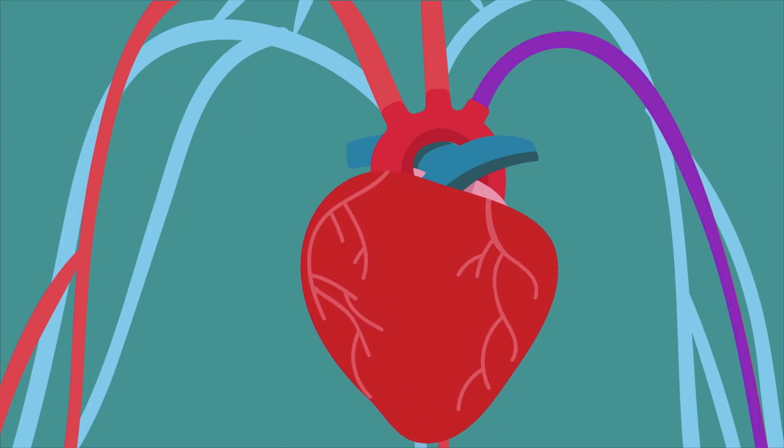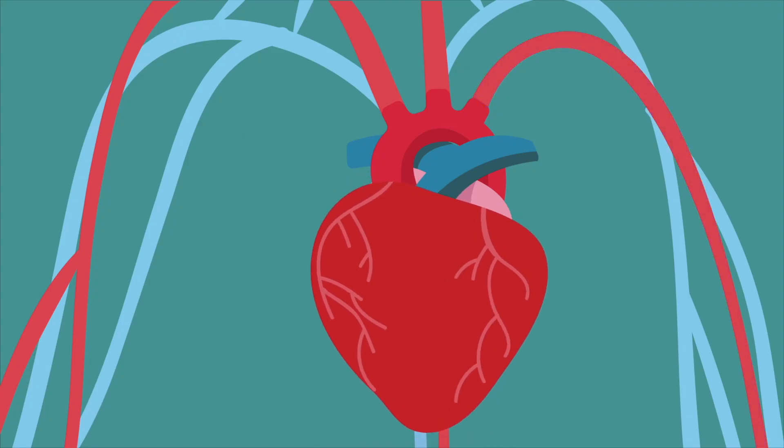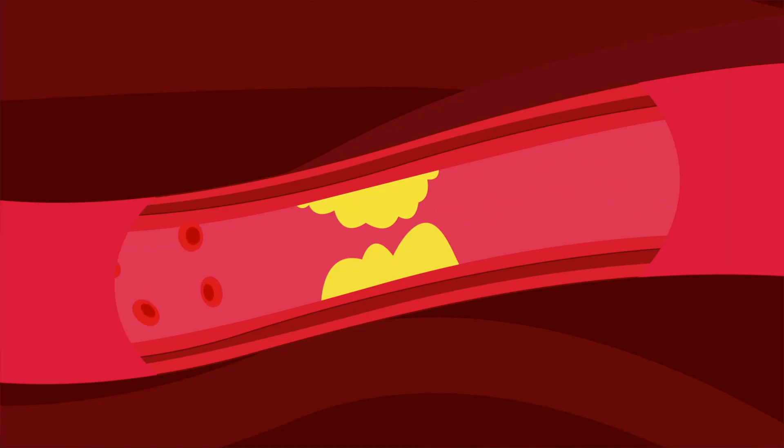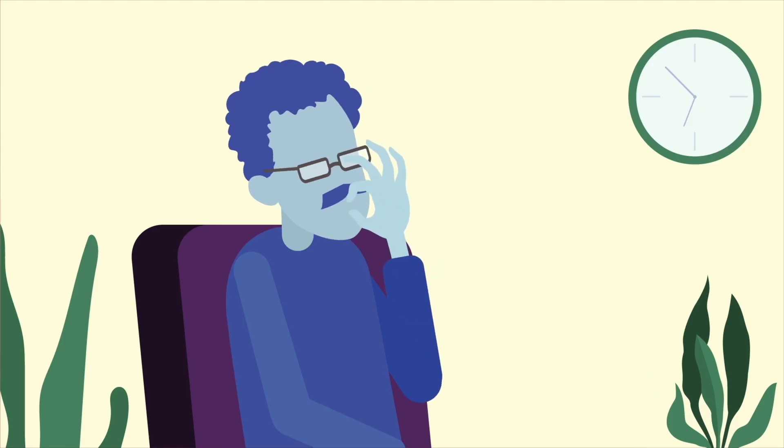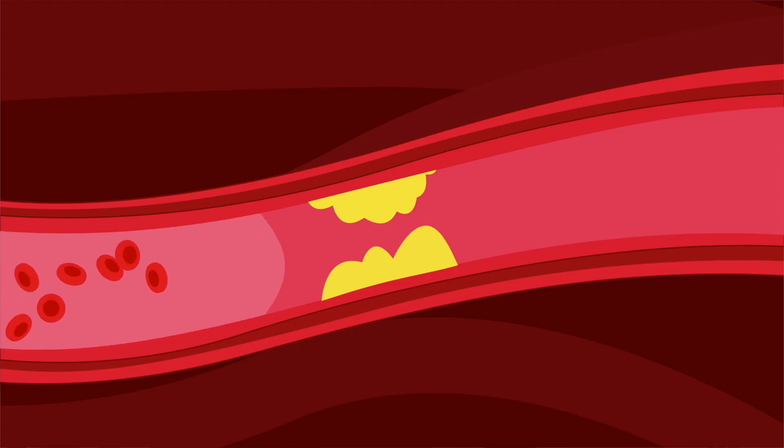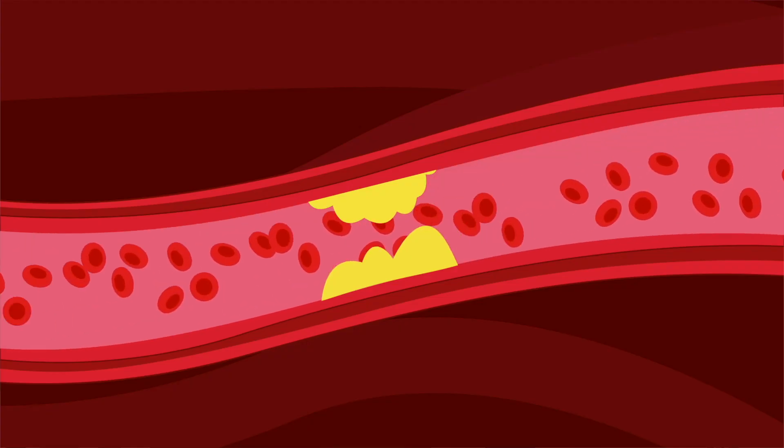When someone is having a heart attack, our goal is to restore the blood circulation to the part of the heart that is damaged from the blockage as soon as possible. This is why identifying symptoms of heart attack and getting the right medical care is extremely important. The person is given medicine called aspirin which slows down the process of clot formation.